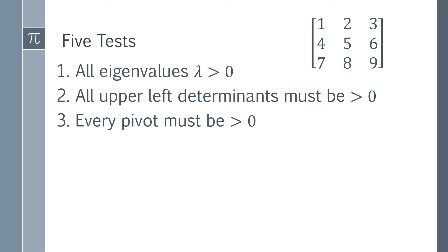The third test is that every pivot must be greater than zero. If you find all the pivots and show that they're greater than zero, that is also a test for whether the matrix is positive definite.